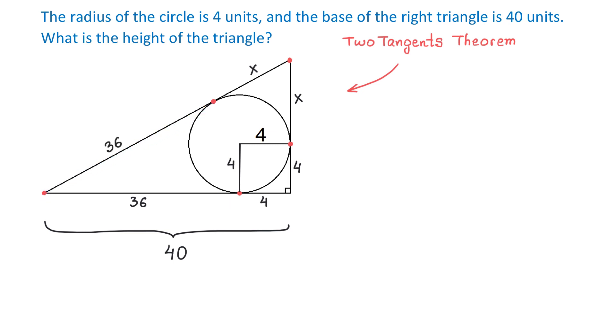So this is what we have so far. The base of this right triangle is 40 units, the height is x plus 4, and the hypotenuse is x plus 36. Then we can use the Pythagorean theorem to write the following equation.